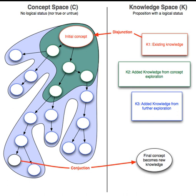CK theory was shown by Hatchuel and Weil to be closely related to Brahe's formal design theory and its clarification by Brahe and Reich's coupled design theory, which are both based on topological structures for design modeling. The core idea behind CK theory is to define rigorously a design situation. A brief is an incomplete description of objects that do not exist yet and are still partly unknown. The first step in CK theory is to define a brief as a concept, and the second step is to characterize the operators needed between the concept and knowledge spaces.